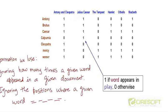The other information that we are losing here in generating this term document incidence matrix is that we are losing the positions where a given word appeared in a given document.